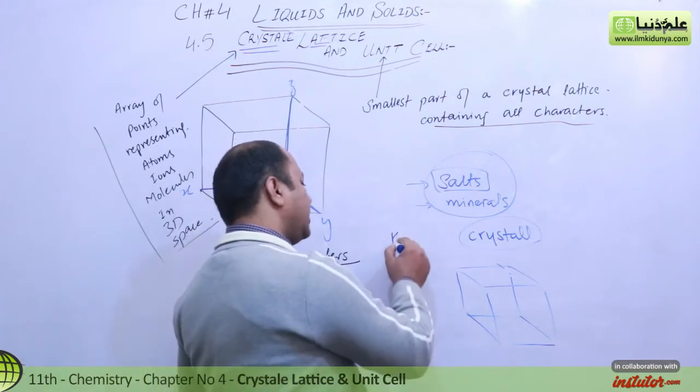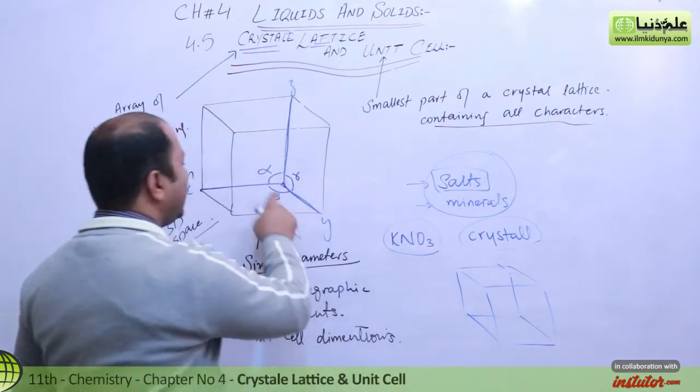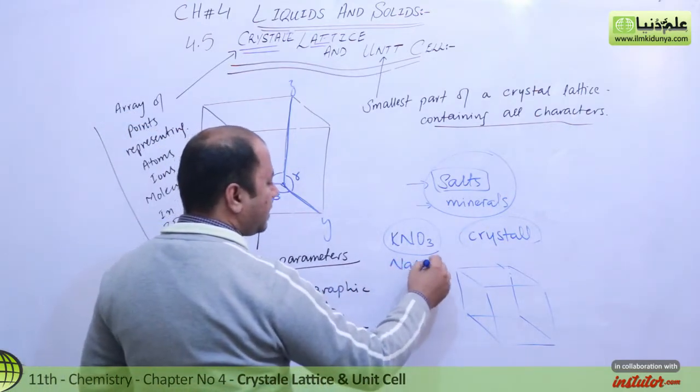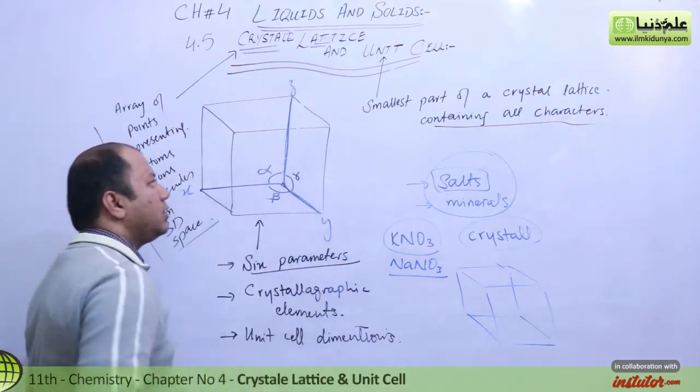It makes you understand that there are angles, and let me tell you one more thing: in different crystal lattices, some angles can be different. If we use potassium nitrate as a salt, then its crystal lattice may have two angles the same but one different. In sodium nitrate, maybe two angles are different or the same.